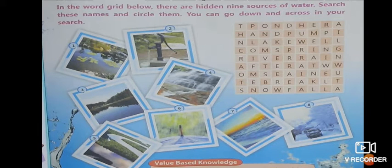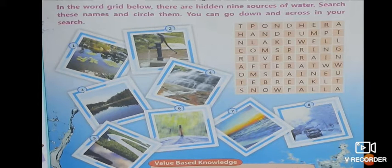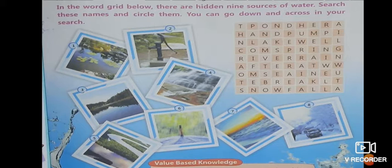In the word grid below, there are hidden nine sources of water. Search these names and circle them. You can go down and across in your search. In the square box where all the alphabets are given, we have to search for nine hidden sources of water. We can also take help from the pictures.